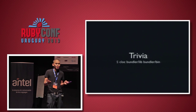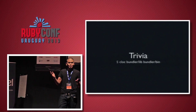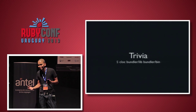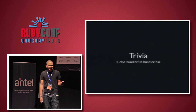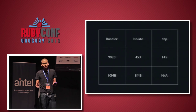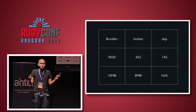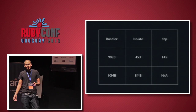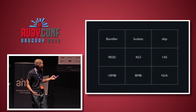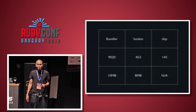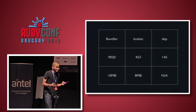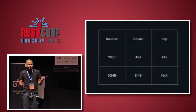A bit of trivia: who here knows how many lines of code your bundler has — just the bin and lib folder? It has 9,020 lines of code in the bin and lib folder, and when you require Bundler it adds 10 megabytes of RAM to your application's runtime. For Isolate, you have 453 lines and it adds 8 megabytes. And we use a tool called dep — we don't require it at all at runtime and just manually require files, so we don't add anything to the runtime.